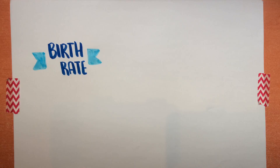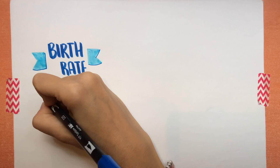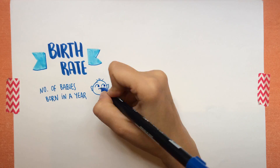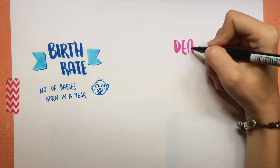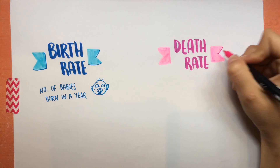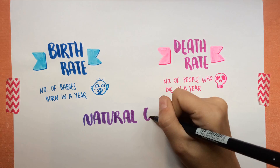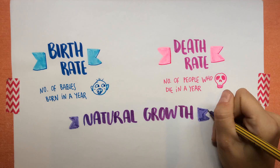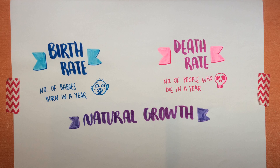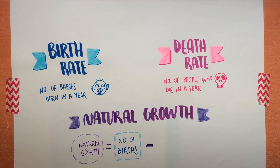Birth rate is the number of babies born in a place in one year. Meanwhile, death rate is the number of people who die in a place in one year. The difference between the number of people who are born in an area in one year and the number of people who die is called natural growth. To calculate the natural growth we need to subtract the number of deaths, that is the death rate, from the number of births, that is the birth rate.